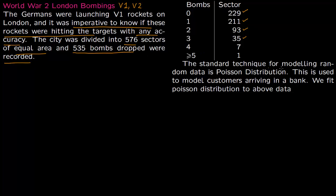The standard technique for modeling random data is Poisson distribution. It is used for customers arriving in a bank or cars passing on a road. The objective was to fit Poisson distribution to the above data.